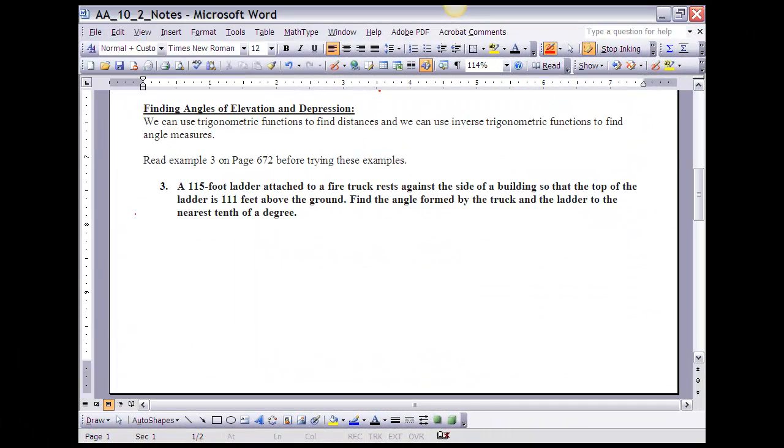We can use trigonometric functions to find the distance, and we can use inverse trigonometric functions to find angle measures. So, if that's the case, if we want to find an angle of elevation or an angle of depression, which we're going to find are the exact same thing, what we're going to do is we're going to use inverse sine, inverse cosine, or inverse tangent to do that. If you haven't done so already, please read Example 3 on page 672 before trying this Example 3 here on your notes.